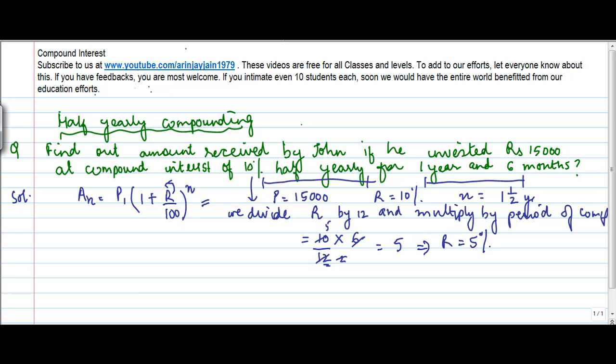So I have to take r as 5%. Now the interesting thing to note here is about n. n is equal to one and a half year. So if I compound on a half yearly basis, then to reach one and a half year, I will need to do the compounding three times.